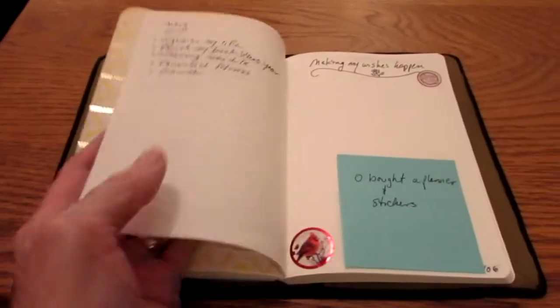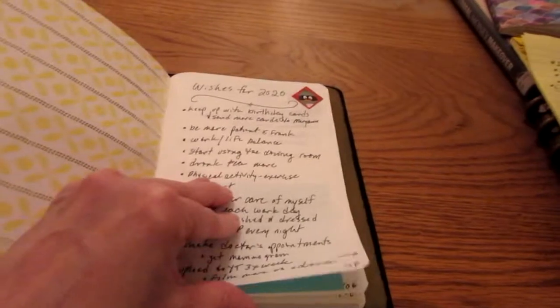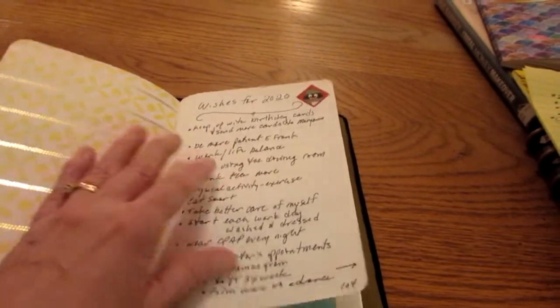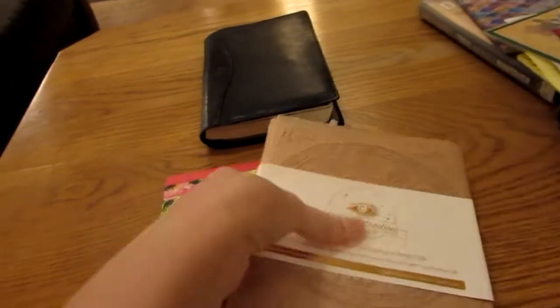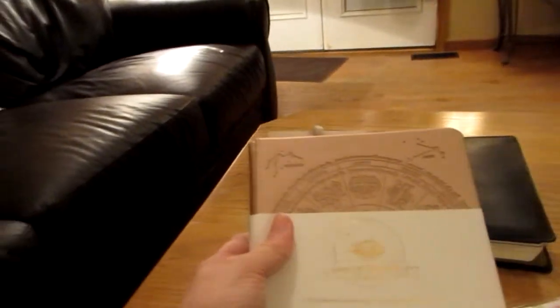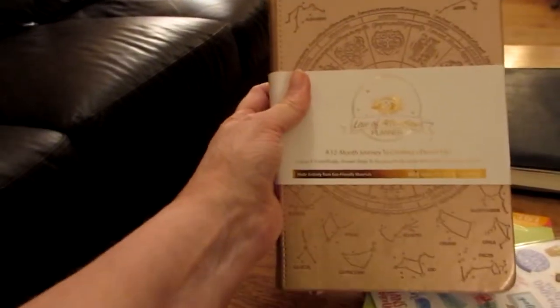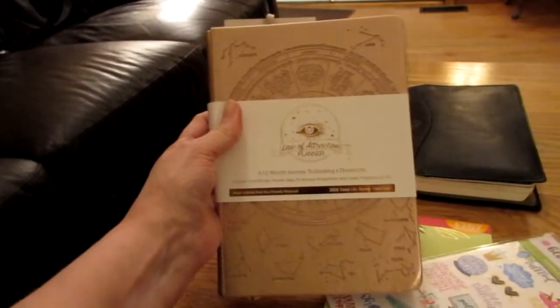And I actually started writing wishes for 2020. I didn't even put my calendar in here yet. How to make things happen and all that. I did get quite a few books from the library about budgeting. And so I am going to be doing some budgeting, probably not in here. So let's put that aside and I'll show you the new planner I got. I have not seen anybody talk about this.